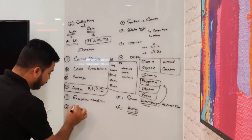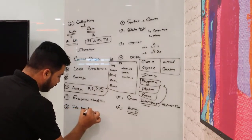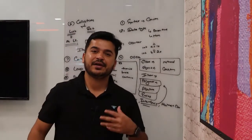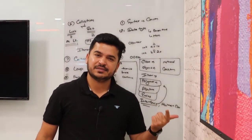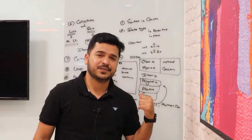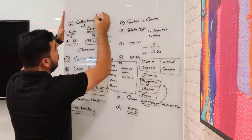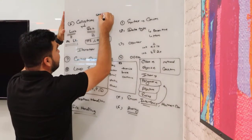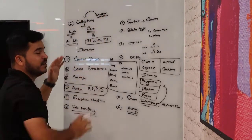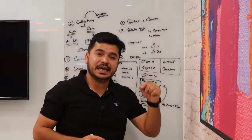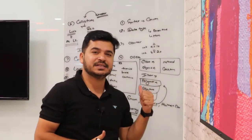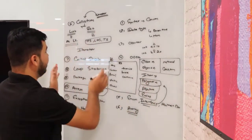Once you are comfortable with exception handling, you can also start with file handling — how you can read external files, whether it's a text file, XML, JSON, CSV, or any kind of file using Java file handling. Also, before you start collections, read about wrapper classes, because you will be using wrapper classes in collections. Understand the difference between int a = 10 versus Integer a = 10, since Integer is a wrapper class and int is a data type.